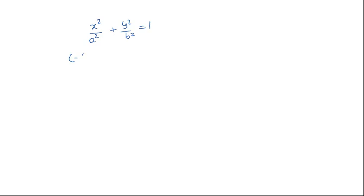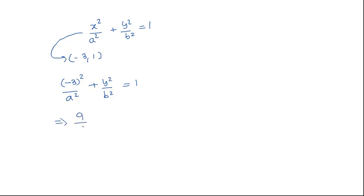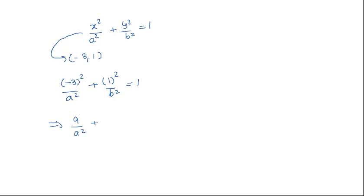The ellipse passes through the point (-3, 1). Since this point lies on the ellipse, it must satisfy the equation. Substituting: (-3)²/a² + 1²/b² = 1, which gives 9/a² + 1/b² = 1.